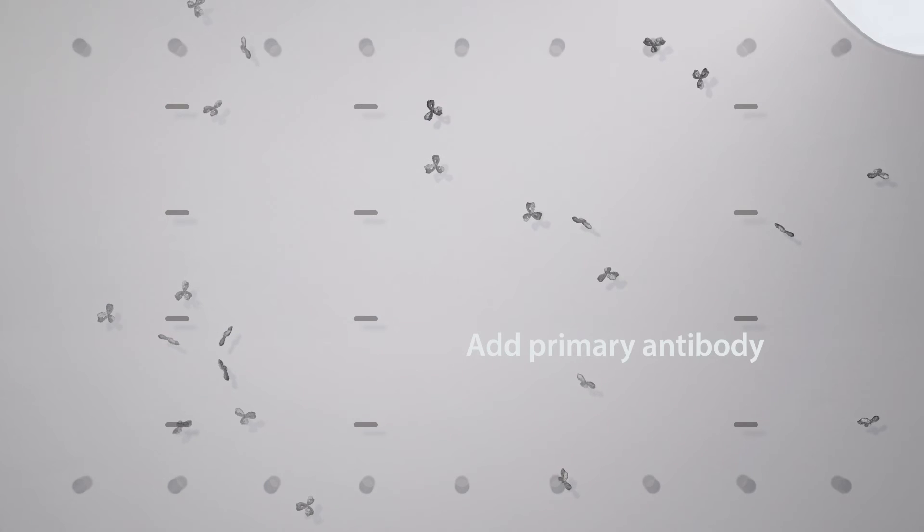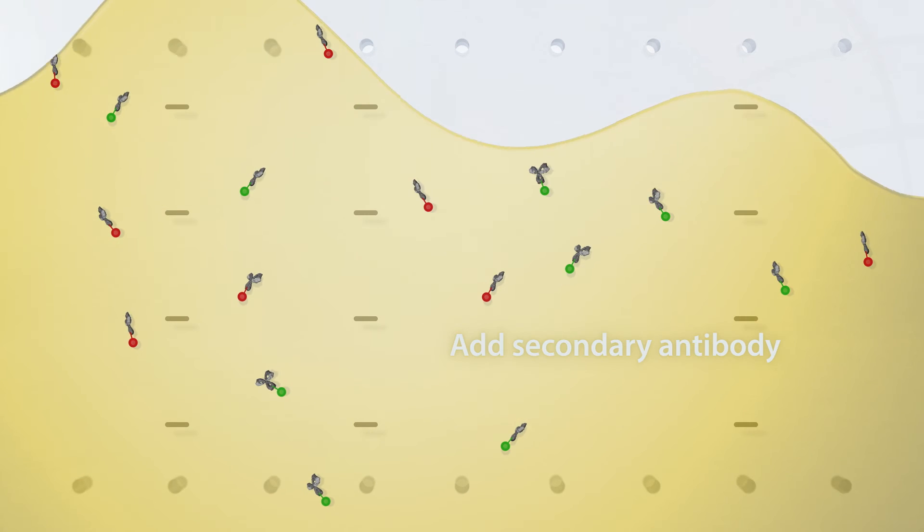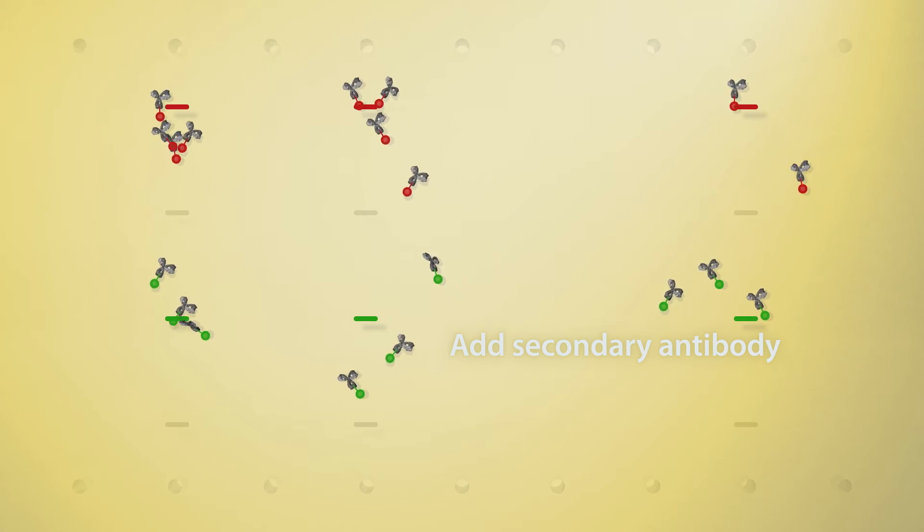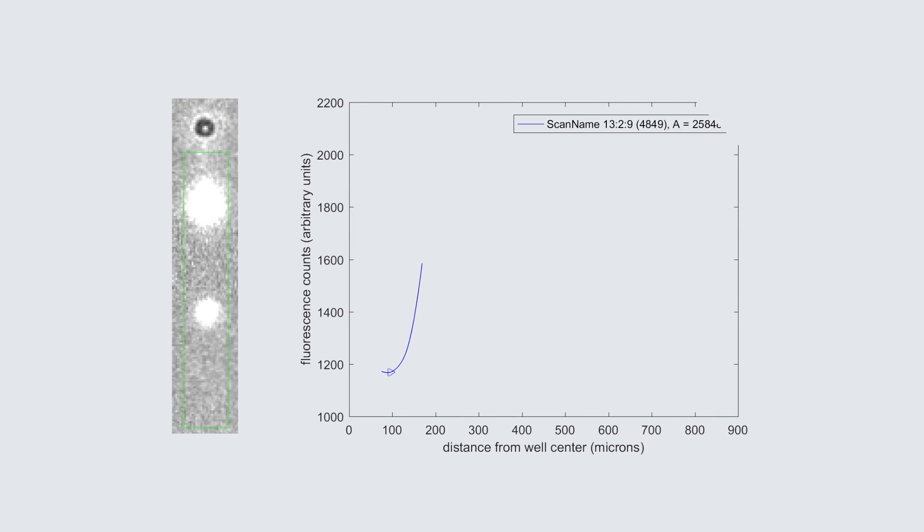Then, just use your favorite conventional Western antibodies to probe the chip for up to 4 targets per cell simultaneously. Image the chip fluorescence and use SCOUT software to quantify the protein peaks in each single-cell separation.